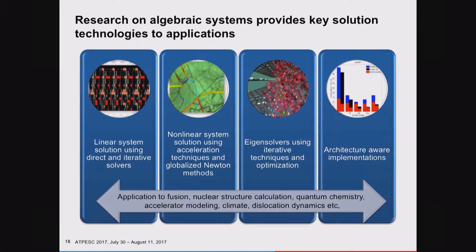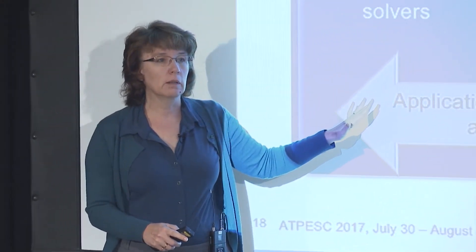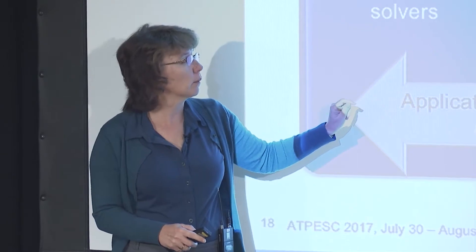The kinds of things we've been working on over the past several years range from linear system solution using direct and iterative solvers, primarily focused on maximizing performance on the machines we're getting. Linear system solution is often 80–90% of the total computational cost in solving these large-scale physics applications. It's imperative that these techniques scale very well and perform in a highly efficient manner.